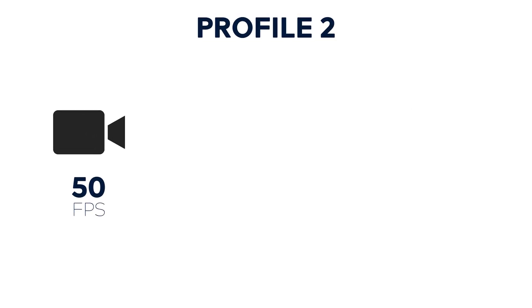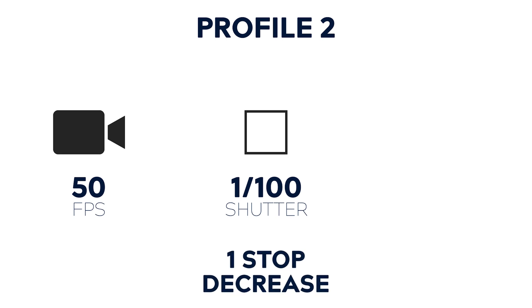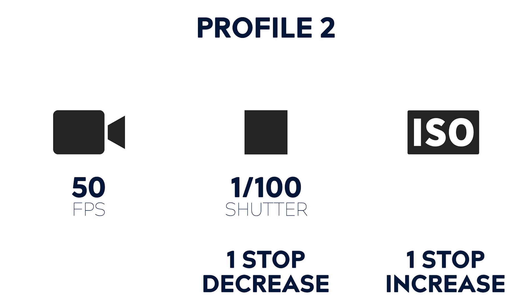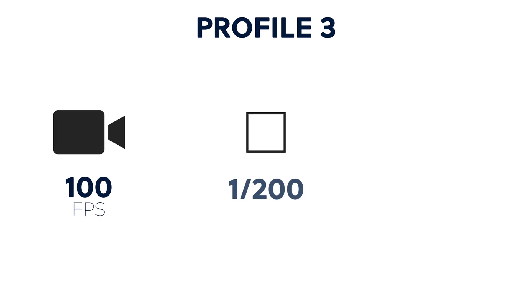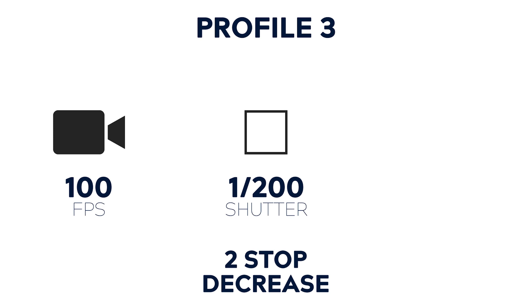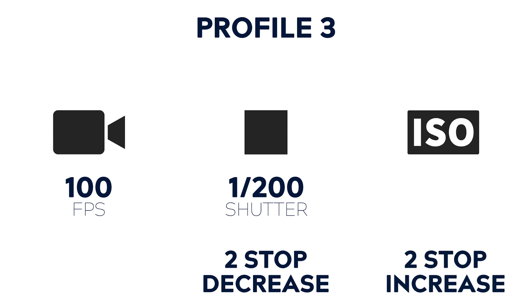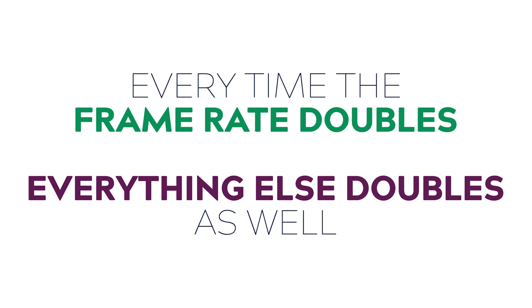When we change to 50 frames per second, our shutter increases to 1/100th, giving us a one stop decrease. This means we need to increase our ISO by one stop, changing it from 100 to 200. For our third profile at 100 frames per second, we have a 1/200th shutter — a two stop difference from our base value. So we need to increase our ISO by two stops, taking it from 100 up to 400. Every time the frame rate doubles, everything else doubles as well. With our three profiles programmed in, every time you switch between them our exposure should remain consistent.